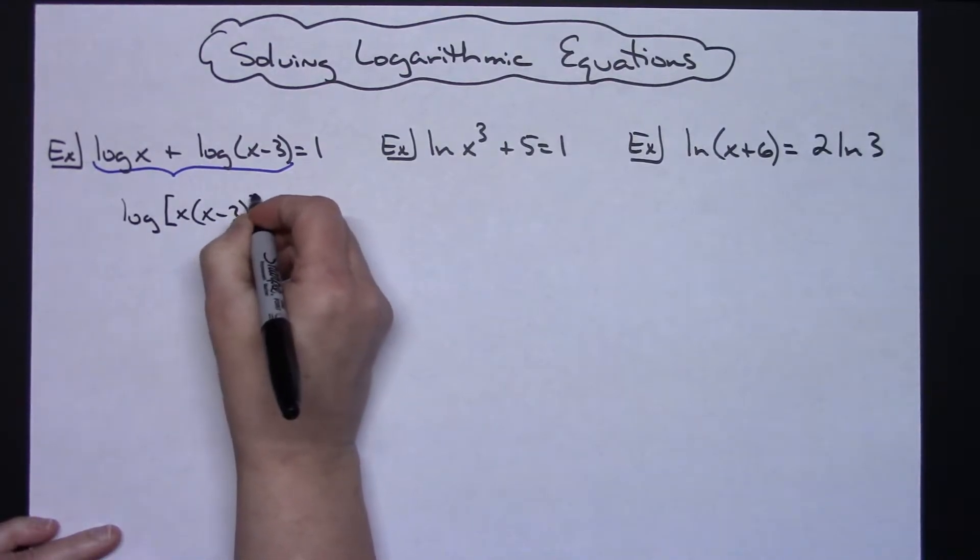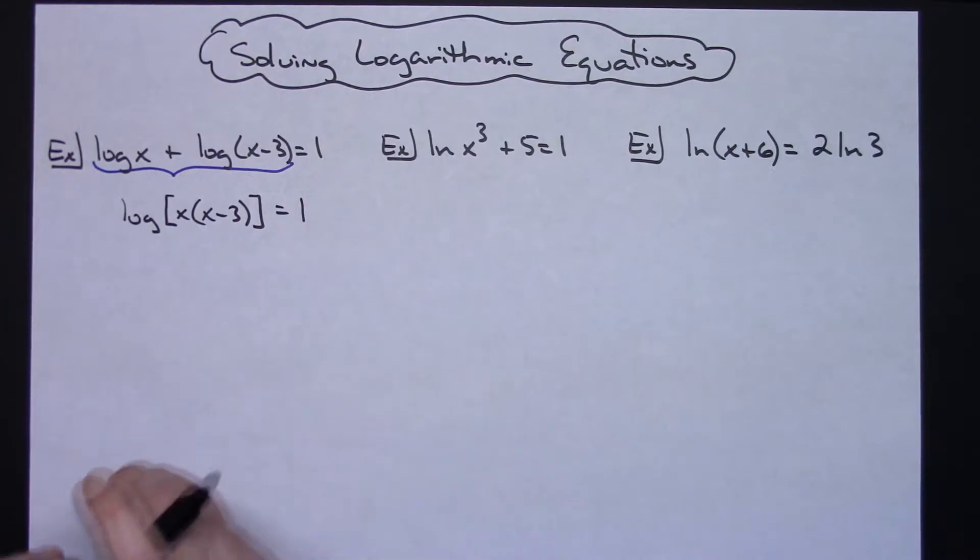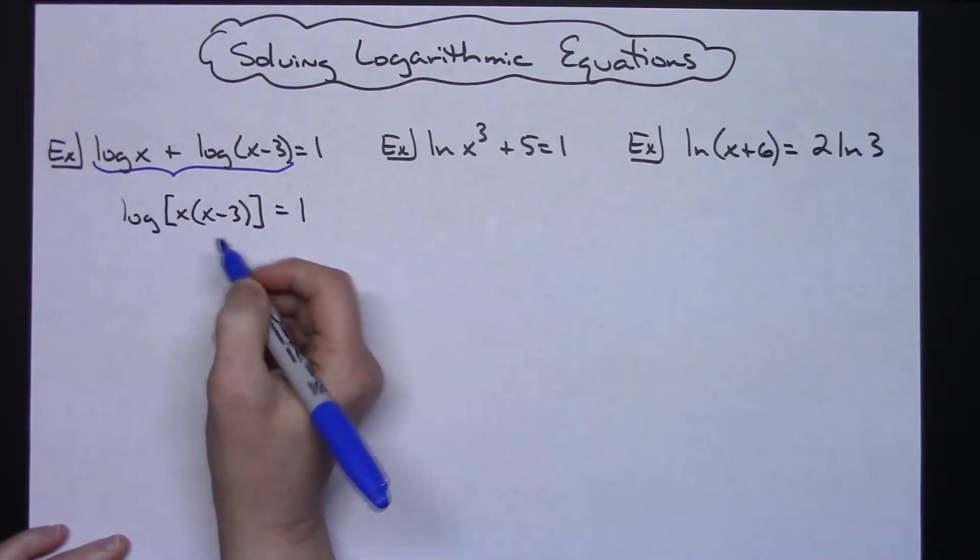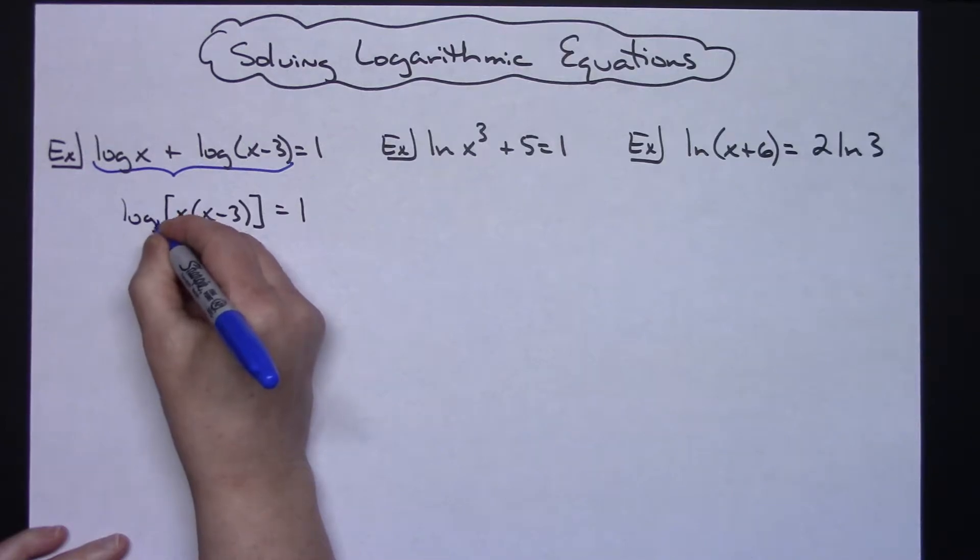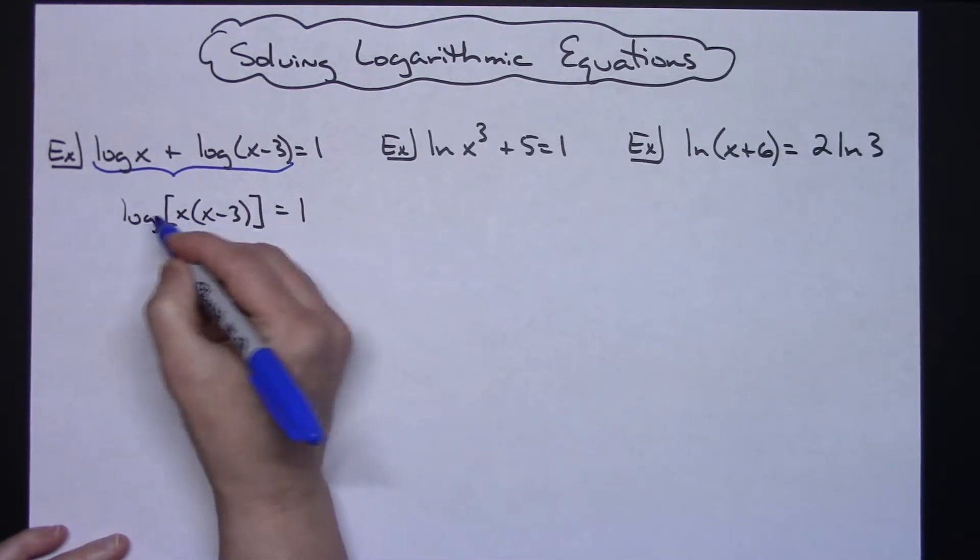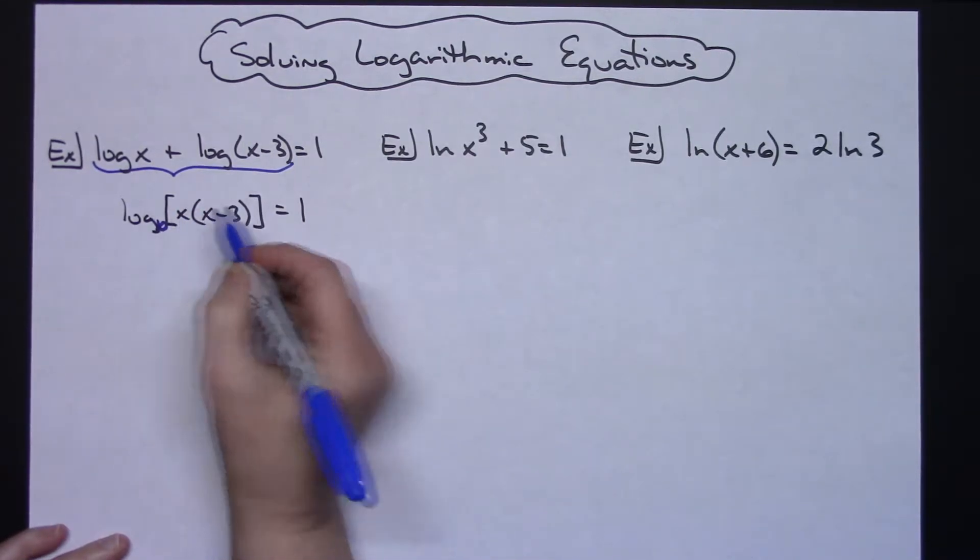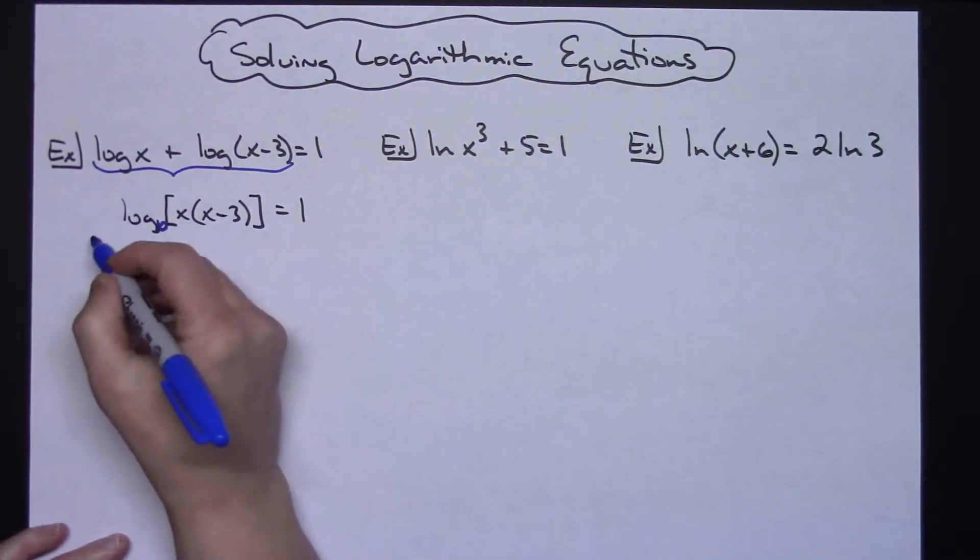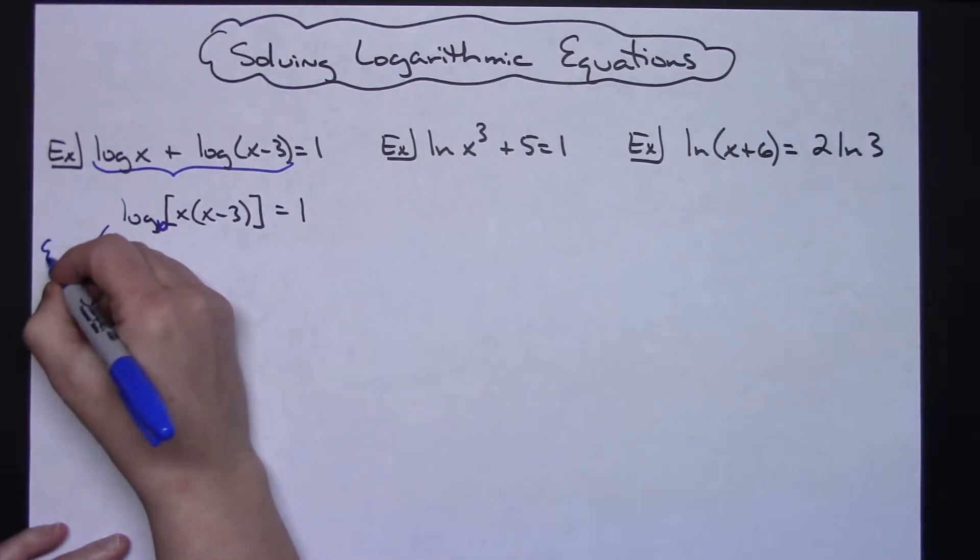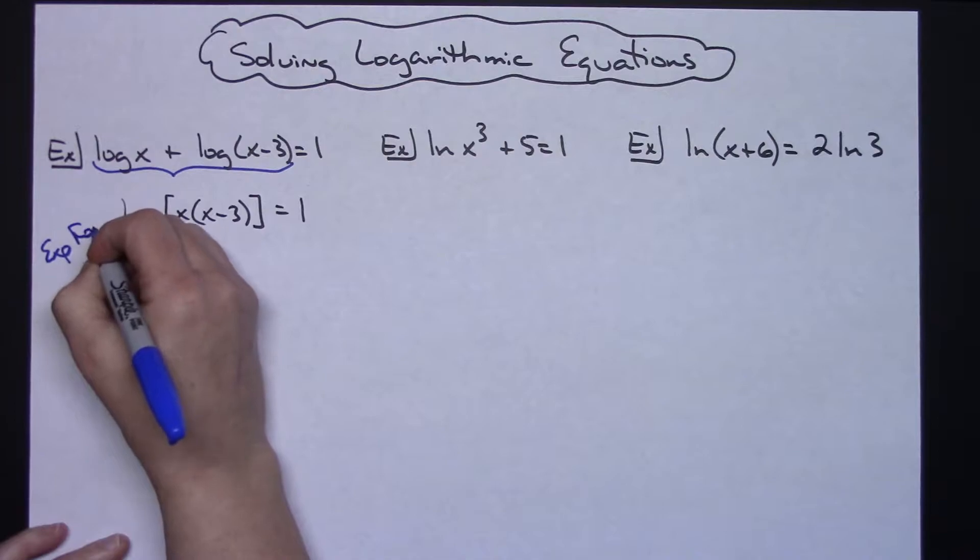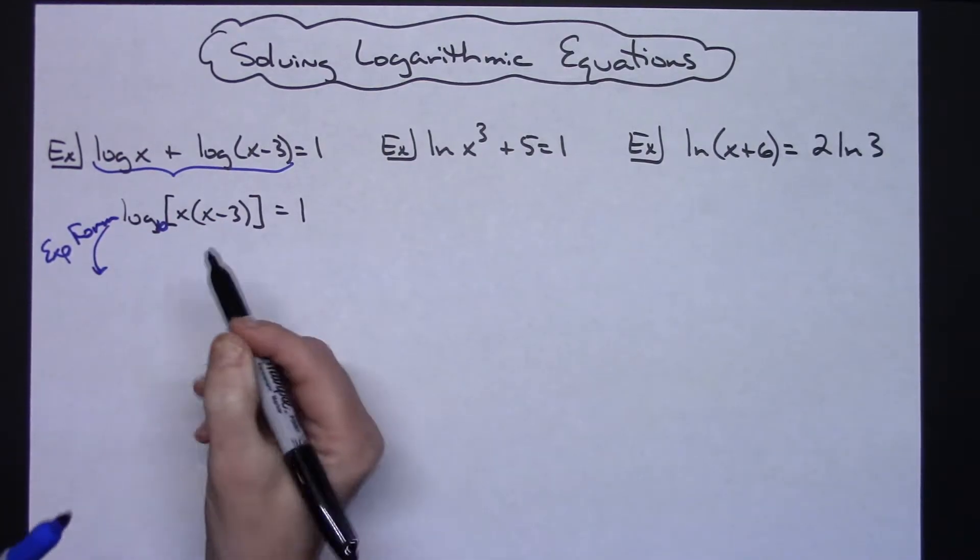Now I am down to the place where I can think, okay I've got an imaginary 10 that's sitting right there. I have a log equation that has been simplified on my left, so then I can go to exponential form. Our next step is exponential form.